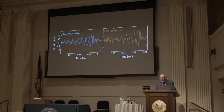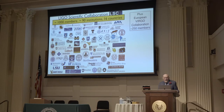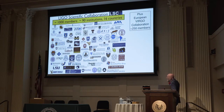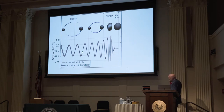Here are the raw signals — surprisingly strong signals at Livingston and at Hanford. This is the raw data, just bandpass filtered to remove everything below 30 hertz and everything above 300 hertz, and no other data processing. The data were analyzed with great care by a team of 1,000 members of the LIGO scientific collaboration plus roughly 250 members of the Virgo collaboration in Europe. The ultimate conclusion was that the waveform, when cleaned up, would look like this — a comparison with the numerical relativity simulations. The reconstructed signal is gray; the simulation signal is red.